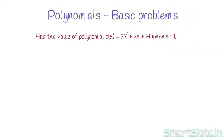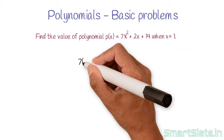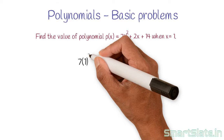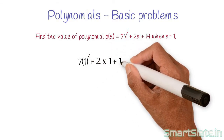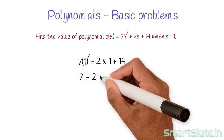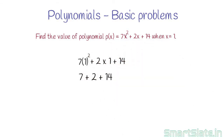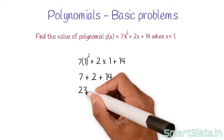Replace x with 1. 7 into 1 squared plus 2 into 1 plus 14, which is 7 plus 2 plus 14. The answer is 23.